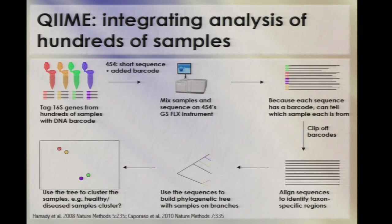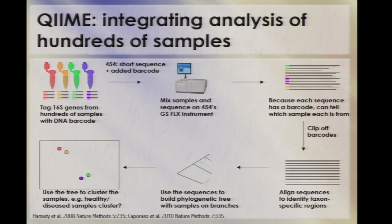How do we do this? Greg Caporaso and others in my lab developed this pipeline called QIIME, which stands for Quantitative Insights into Microbial Ecology. Like the tools Curtis showed you, it makes it much easier to integrate analysis from hundreds of samples. This talk is essentially all 16S data, although the same tools work for metagenomic and other multiomic data as well. It provides a complete pipeline: once you have sequenced the samples, it takes the data right off the instrument, performs a whole bunch of statistical analyses, and winds up with pictures and statistics that allow you to tell these stories.